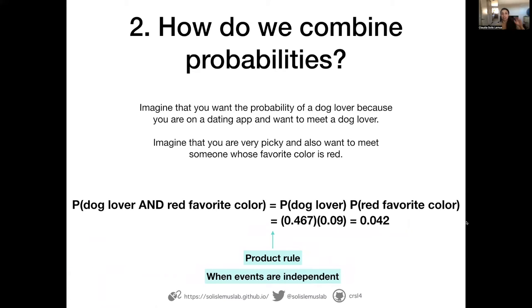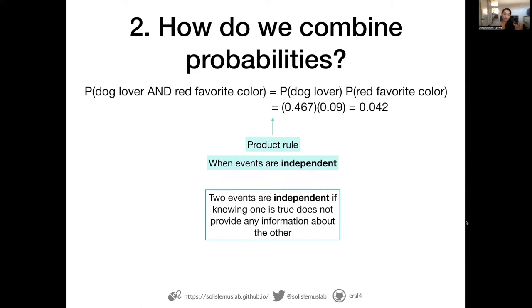There is one assumption I have not mentioned: the product rule is only valid when events are independent. Two events are independent if knowing one event does not provide any information about the other event. If I tell you my favorite color is red, does that tell you whether I'm a dog or cat lover? Probably not. Similarly, if I tell you I'm a dog lover, can you guess my favorite color? Probably not. So these two events are independent, and that's why it's okay to multiply them.